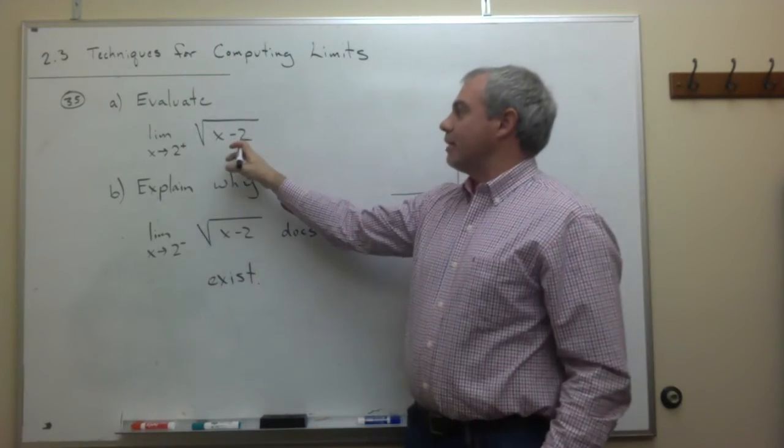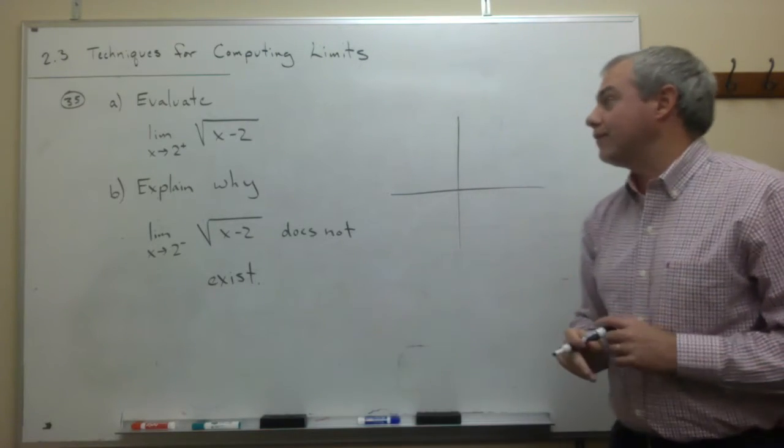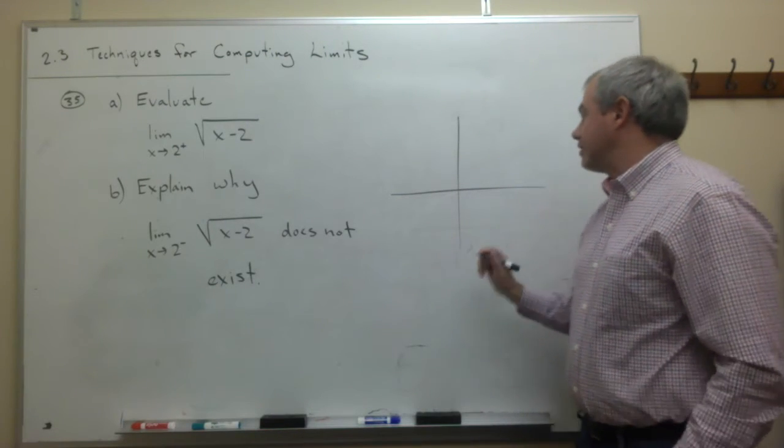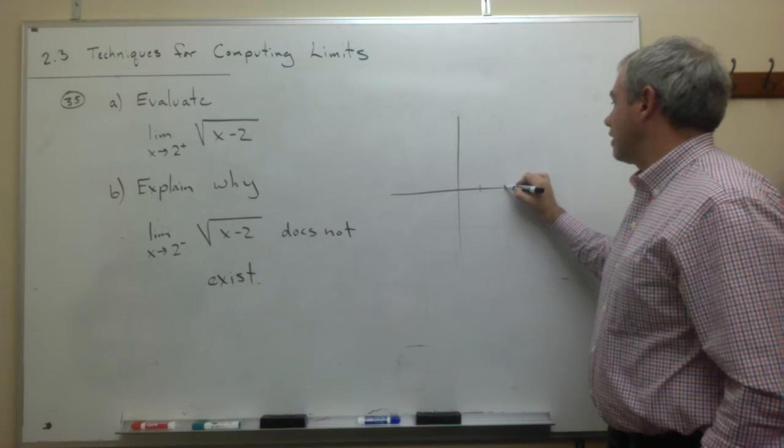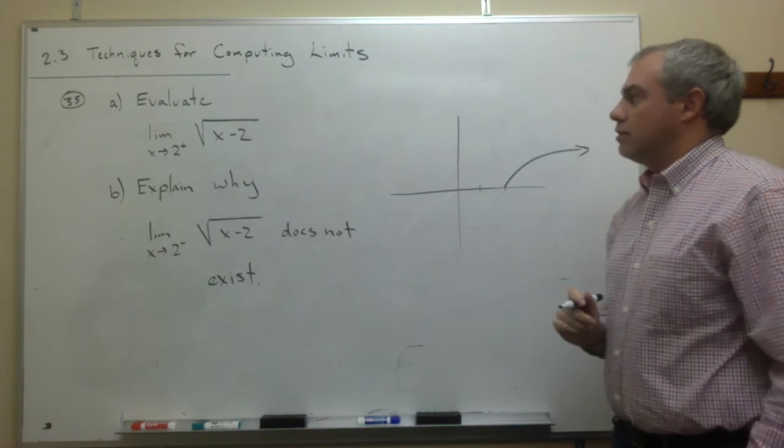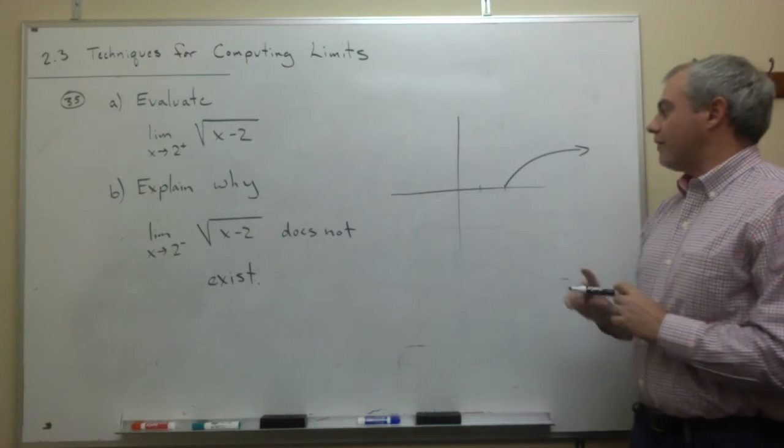So square root of x minus 2 is kind of like the graph for square root x, except it shifted to the right two units. So 1, 2, and then we get this square root of x graph. So this is what the graph would look like.